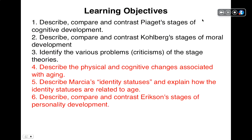The learning objectives for this lecture are: describe, compare, and contrast Piaget's stages of cognitive development; describe, compare, and contrast Kohlberg's stages of moral development; identify the various criticisms of the stage theories; describe the physical and cognitive changes associated with aging; describe Marcia's identity statuses and explain how they relate to age; and describe, compare, and contrast Erikson's stages of personality development. The last three objectives are in red font — meaning they haven't been covered in lecture and you'll need to read about them in the text, as quiz questions can be expected on these.